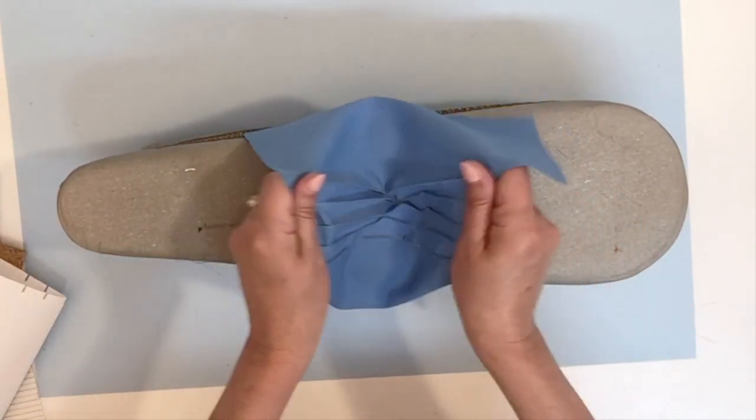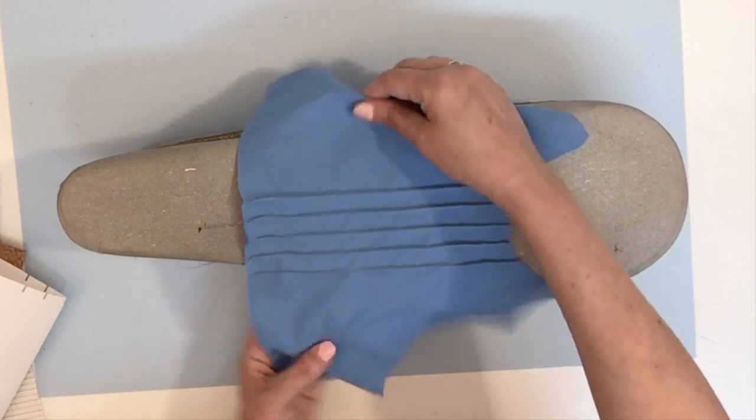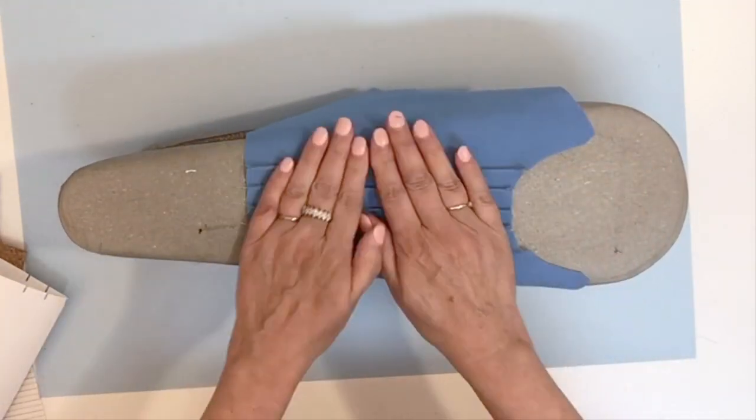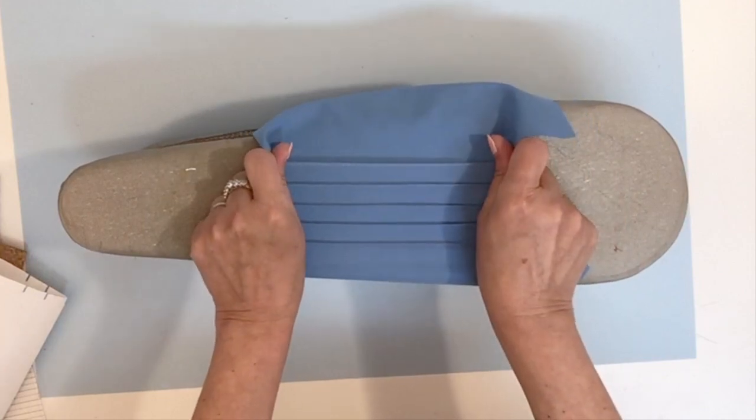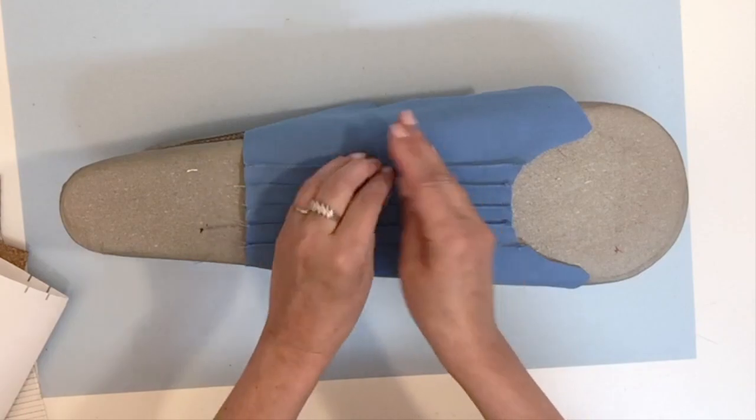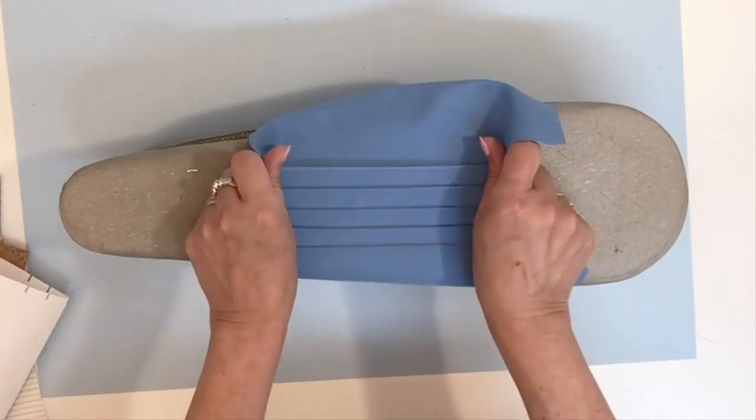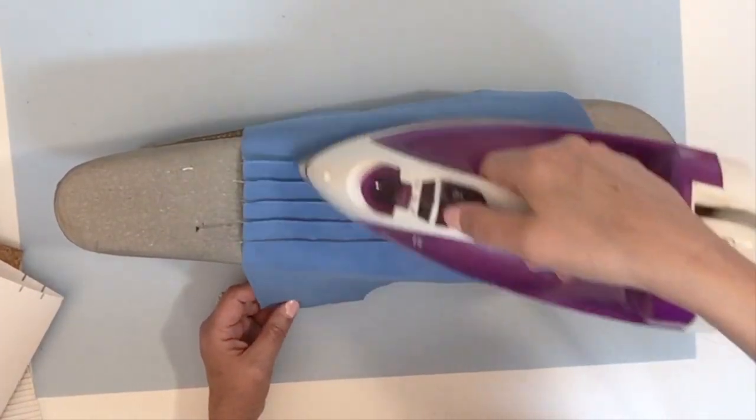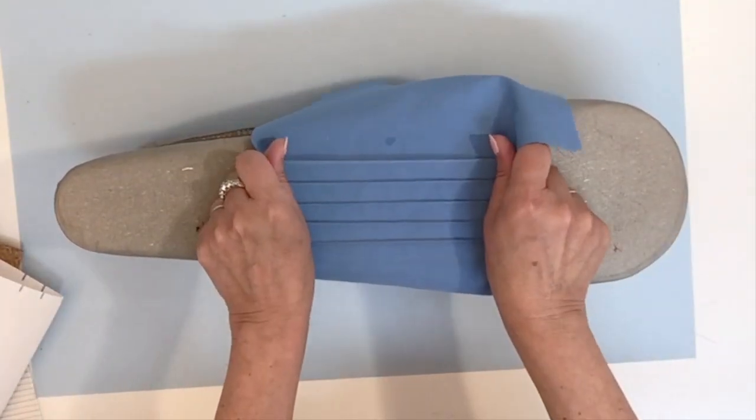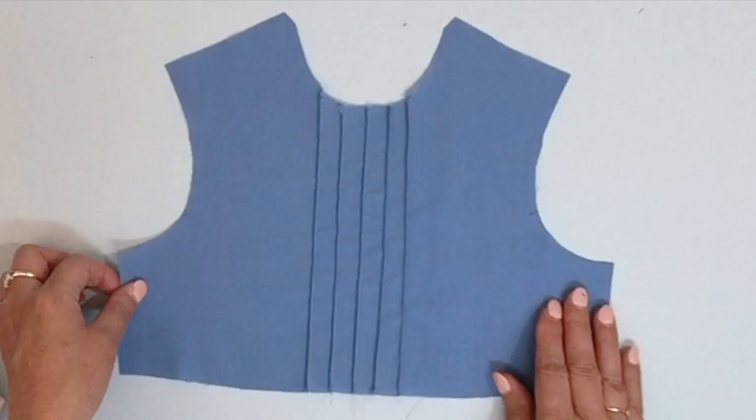Now that the pleats are all done, we're going to pull them on both sides and we're going to give a little bit of steam, pull again. You don't have to press them sending it on one side or the other, just a little steam on both sides.